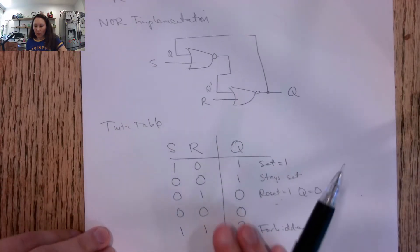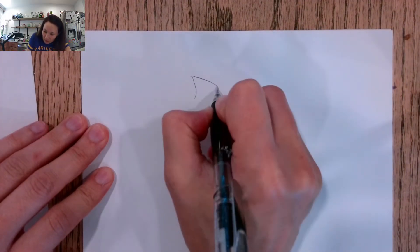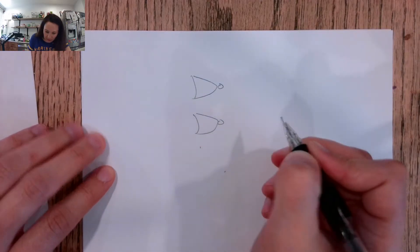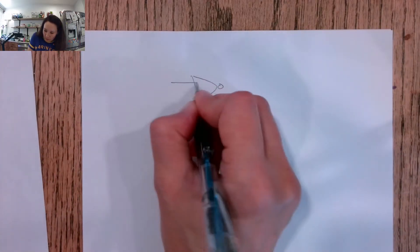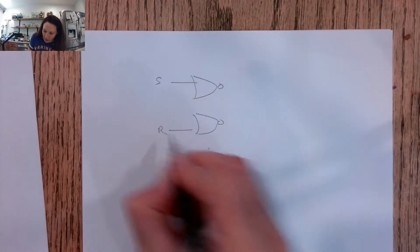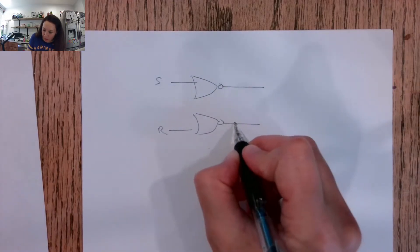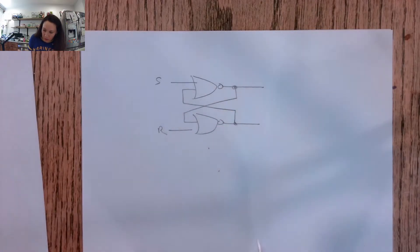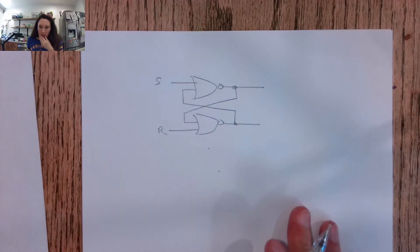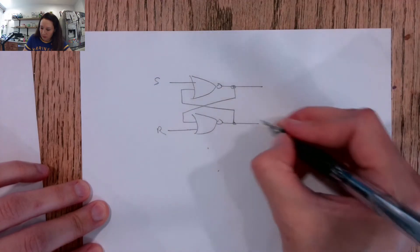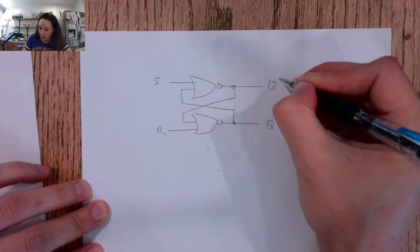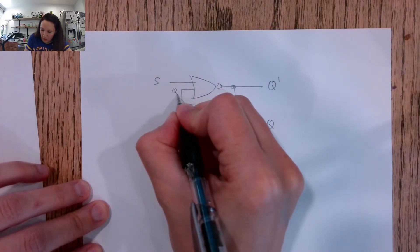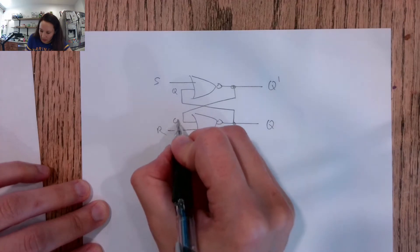So this is the implementation for the NOR. You usually see it like this - most texts will have the NORs stacked on top of each other. They'll have S here and R here, and then take the output from here. This goes as input to that guy, and then the output from here goes as input to this guy. So that would make this Q and that would make this Q naught.